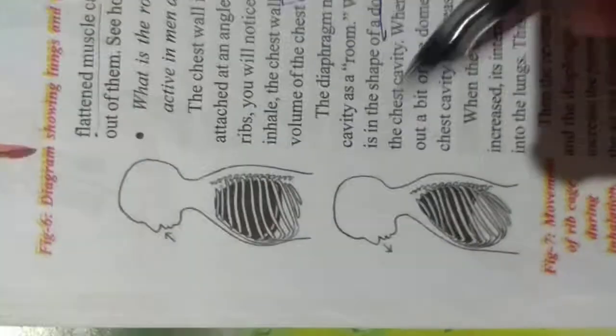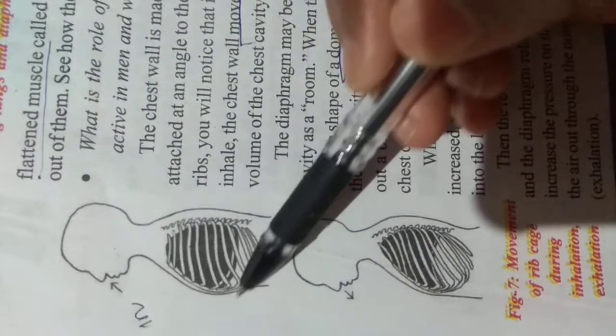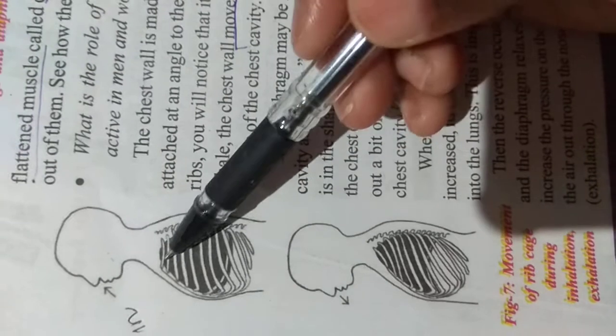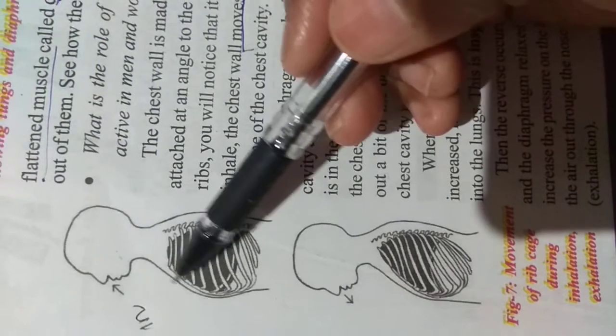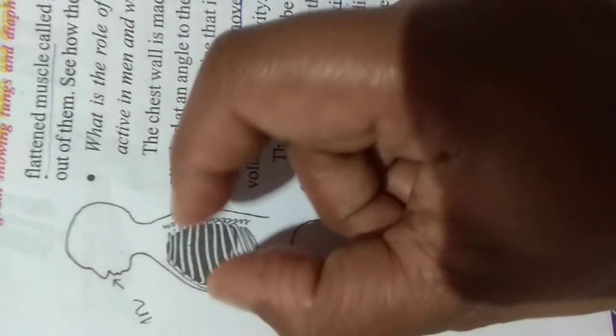So respiration, it will be explained with these two diagrams. If you are inhaling air, that means if you are taking air inside, what happens? This is our chest. So as air is entering into this, our chest, bones, chest muscles, lungs, everything will expand. Everything will move front.